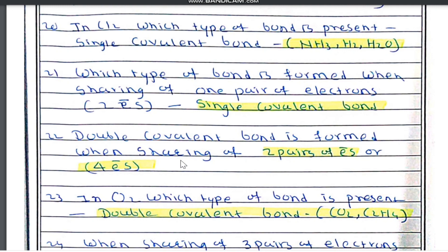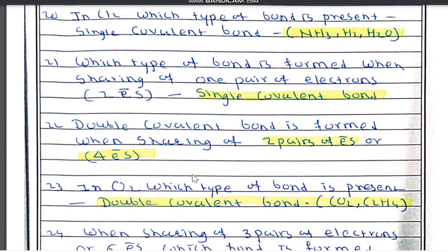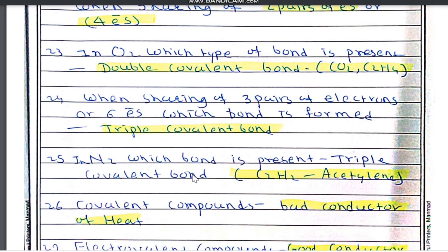Question number 22: a double covalent bond is formed when there is sharing of two pairs of electrons, that means four electrons. Question number 23: in oxygen, a double covalent bond is present. Other examples of double covalent bonds are CO2 and C2H4.